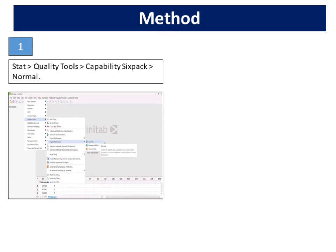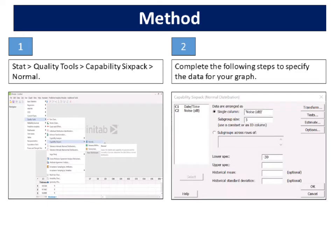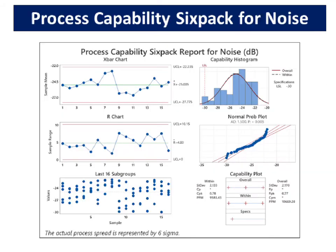Select Stat, Quality Tools, Capability 6-Pack, Normal. Complete the following steps to specify the data for your graph. The process capability 6-pack for noise is shown below.